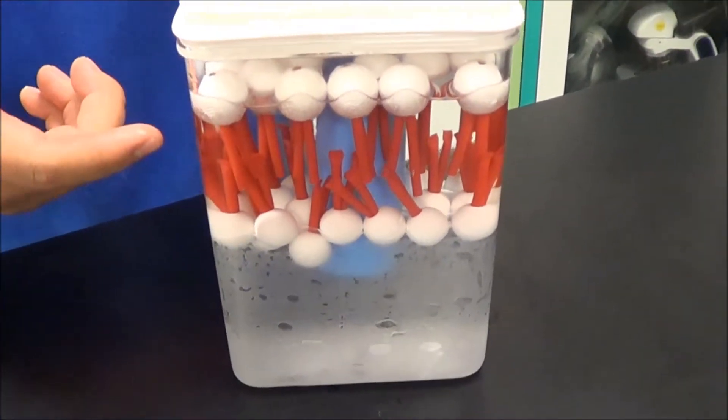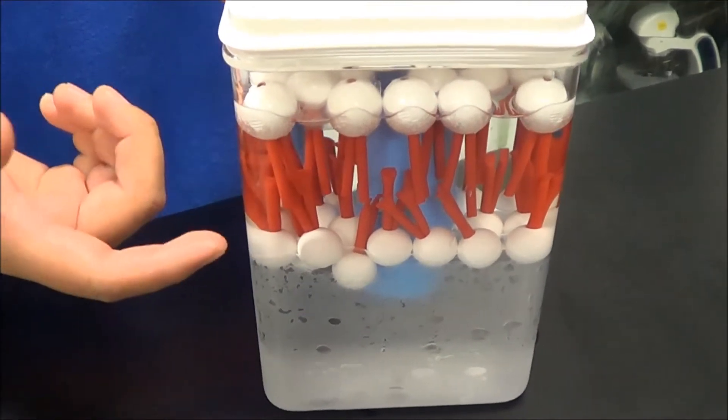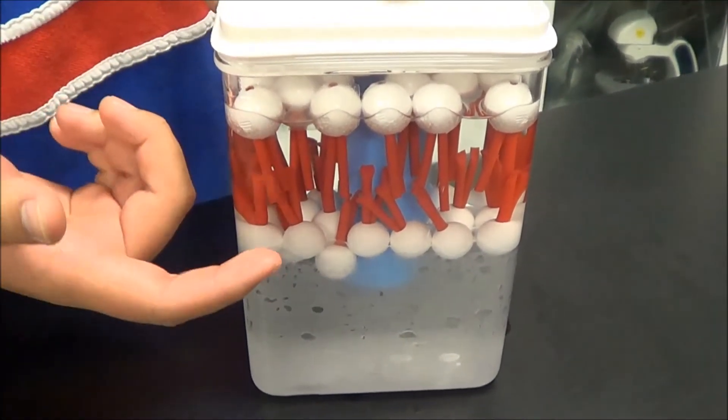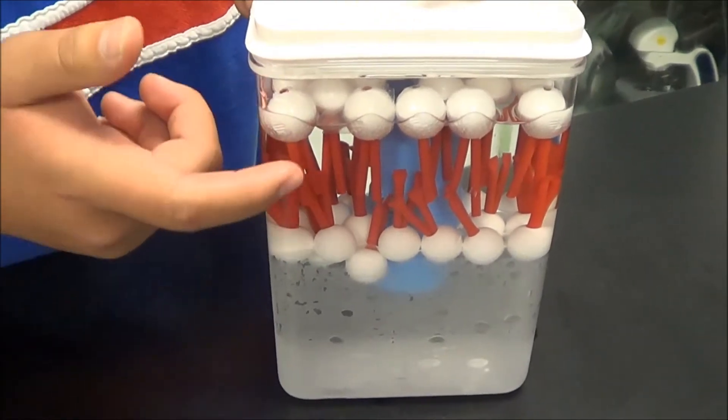The cell membrane isn't rigid like an eggshell, but instead it's very much like a bubble. See, here are lipids, specifically phospholipids, because they're made of phosphate and fatty acids.